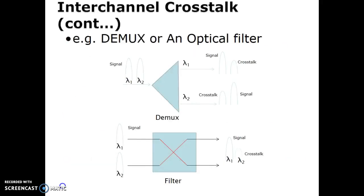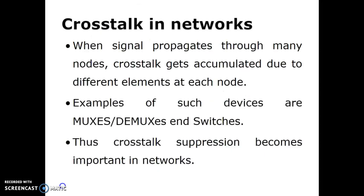In this diagram, it shows crosstalk occurring in the demultiplexer and also in optical switches and filters. Crosstalk in networks: when a signal propagates through many nodes, crosstalk gets accumulated due to different elements at each node. Examples include multiplexers, demultiplexers, and switches. Crosstalk suppression becomes important in networks.